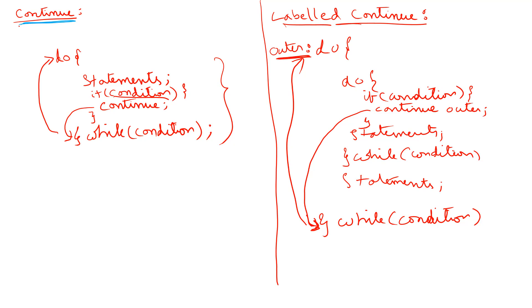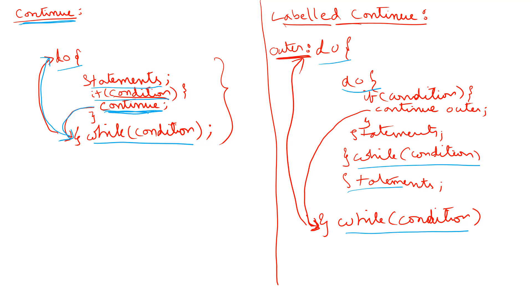Let's see this one more time. A simple continue statement is used to come to the end of the current iteration of the current loop. I have a do-while loop, and if I want to come to the end of this current loop, I have some condition and put continue — it comes to the end and then goes back and proceeds further. A labeled continue statement is used to come to the end of the outer loop. With two nested do-while loops, I label the outer loop and say 'continue outer' to come to the end of the outer loop.